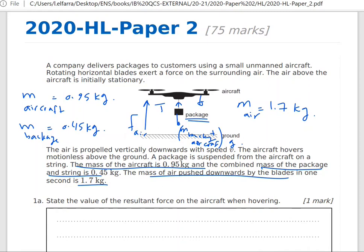What is the value of the resultant force on the aircraft? The aircraft is not moving. If you read the question, the aircraft hovers motionless above the ground. From Newton's first law, summation of forces acting on the aircraft will equal zero because the aircraft is in equilibrium.